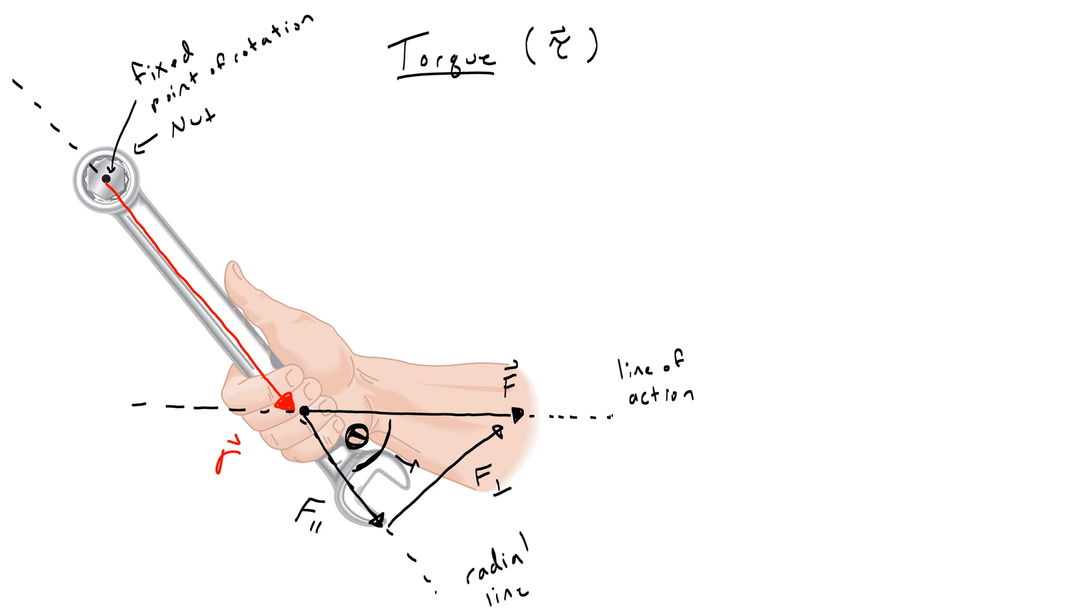F perpendicular is opposite of the angle. So when we try to find its amount, we're going to use the magnitude of the force, which is the hypotenuse F, times sine of the angle. If you're unsure of how that works, pause the video and draw a right triangle to prove this to yourself.